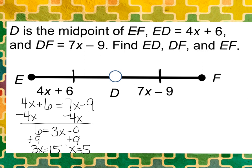Now that I have my variable to solve for, I need to find out all these segment lengths. Let's first do ED. And I'm going to do one in each color, so I'll do ED in black. ED is equal to 4 multiplied by 5 plus 6, which equals 26.